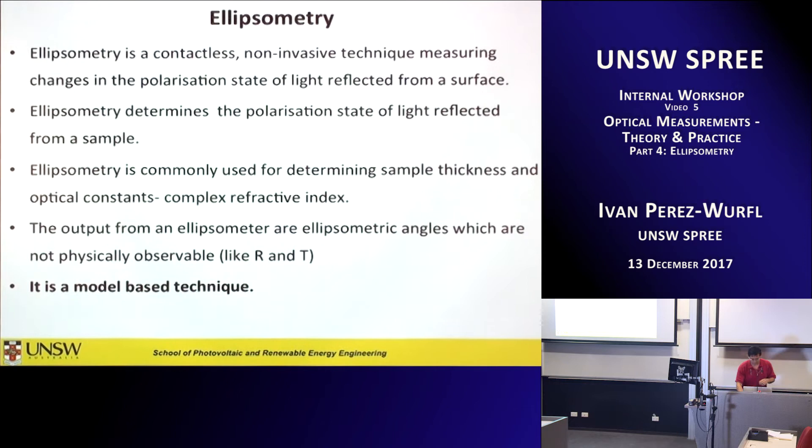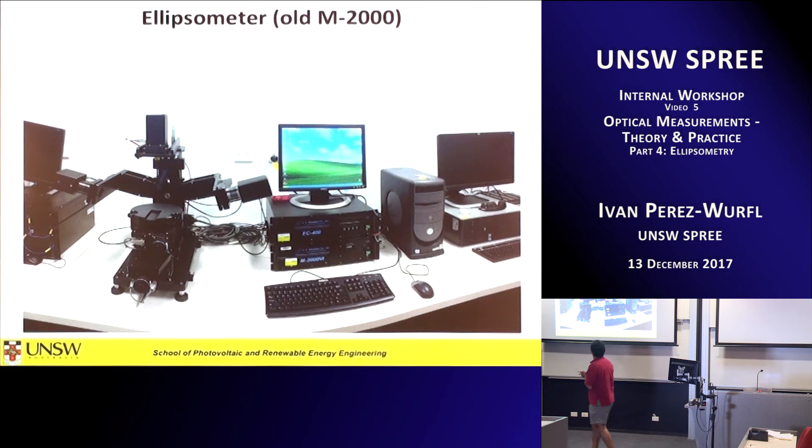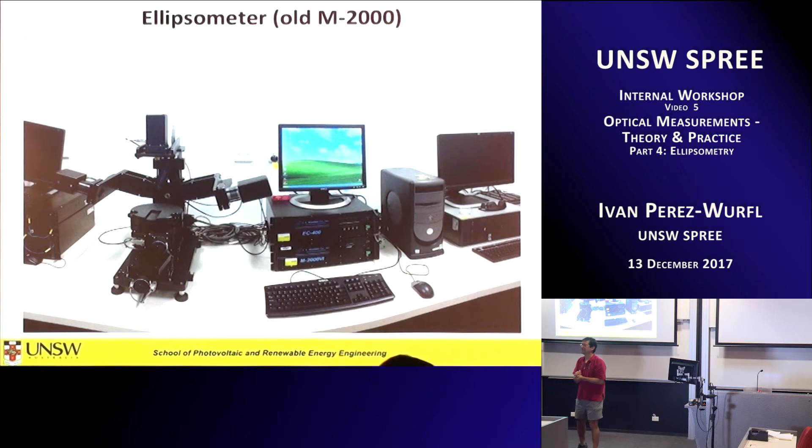Very specifically, the ellipsometer that we have is an M2000 — it's a very old version. The current model of the same instrument changes the angle automatically, which is the one thing we cannot do. But it's actually a really good instrument.